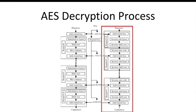At the very end of decryption, we perform the AddRoundKey step using the original cipher key, just as the very first step in encryption was XORing the cipher key with the plaintext — that was round zero. This final step going all the way up recovers our plaintext.